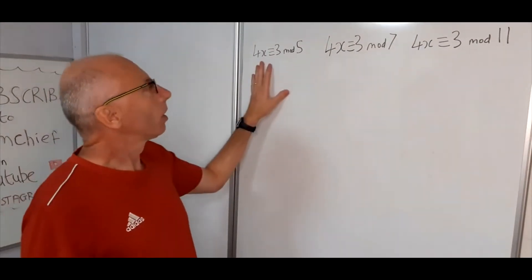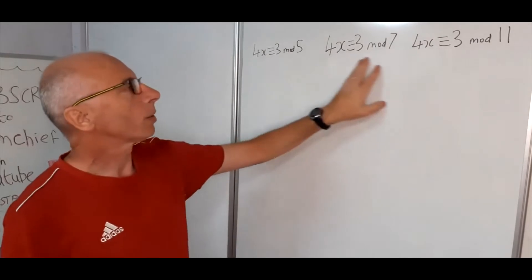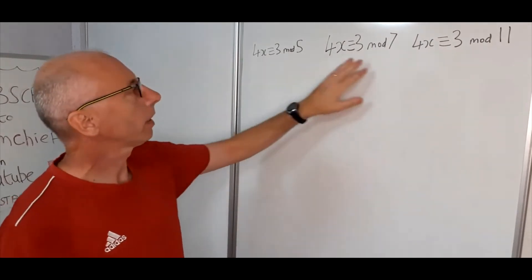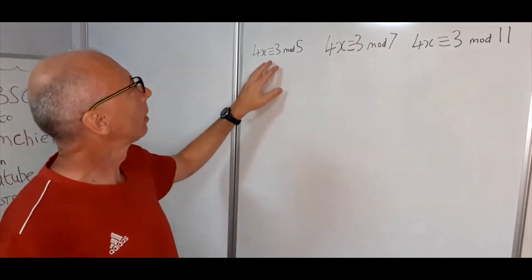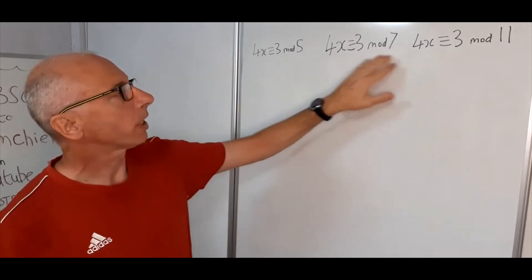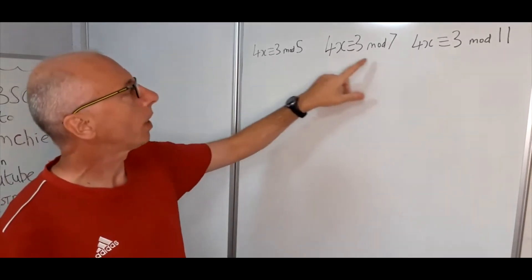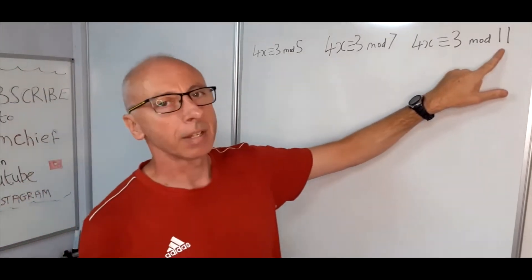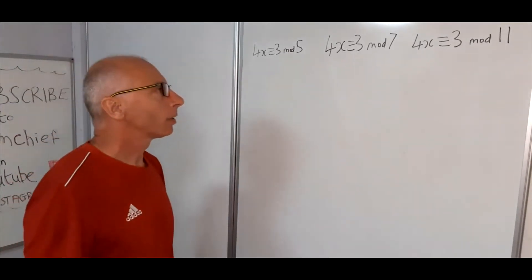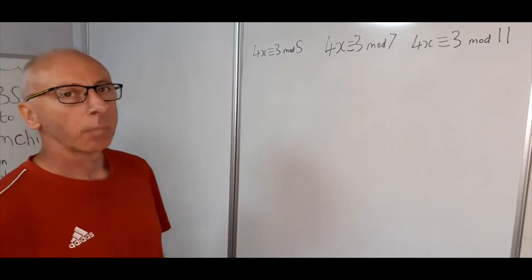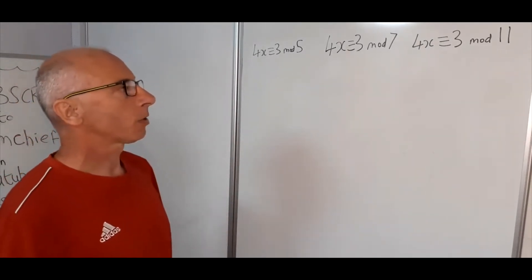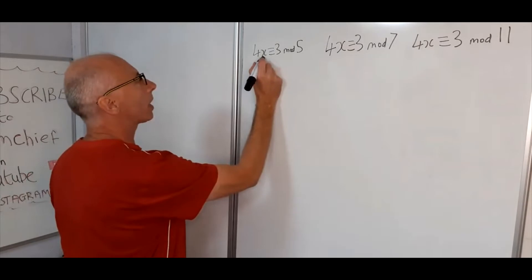So we've got a question here, what is these linear congruences? We've got three of them here and they're all pretty similar. 4x is congruent with 3 on all three, but the moduluses are different. So we've got mod 5, mod 7 and mod 11. So how are we going to go about solving what x is? That's what we need to find is what the value of this x is.